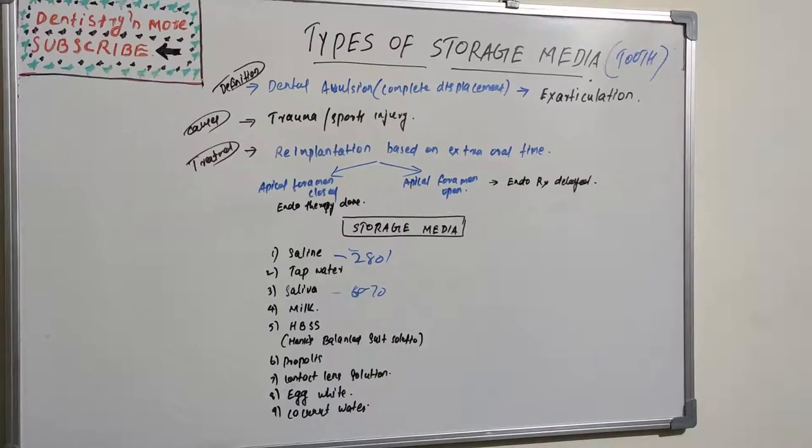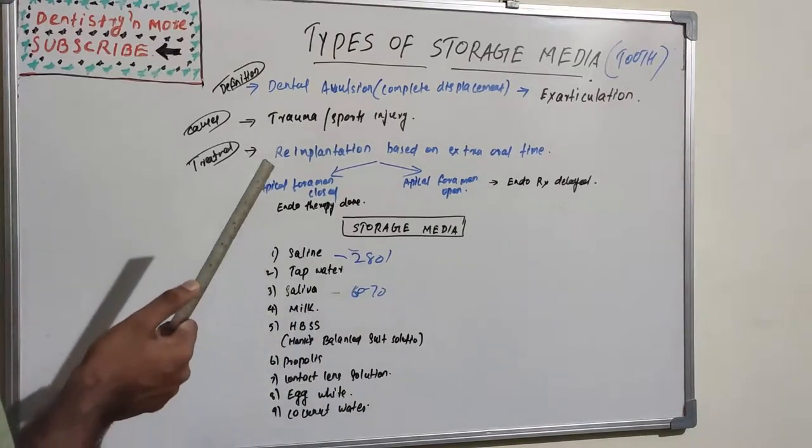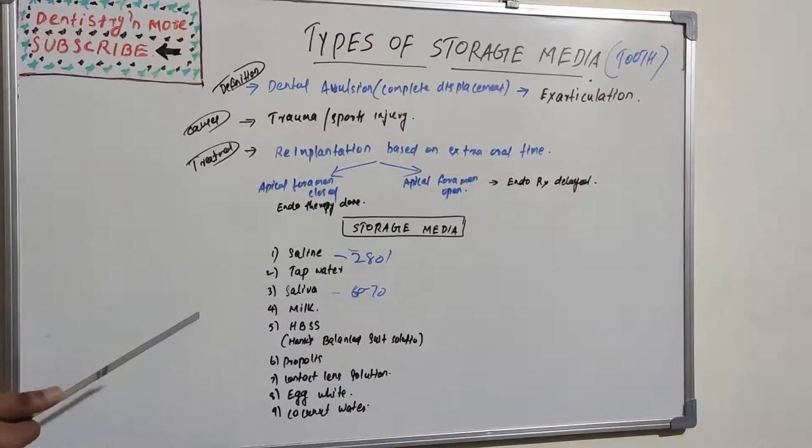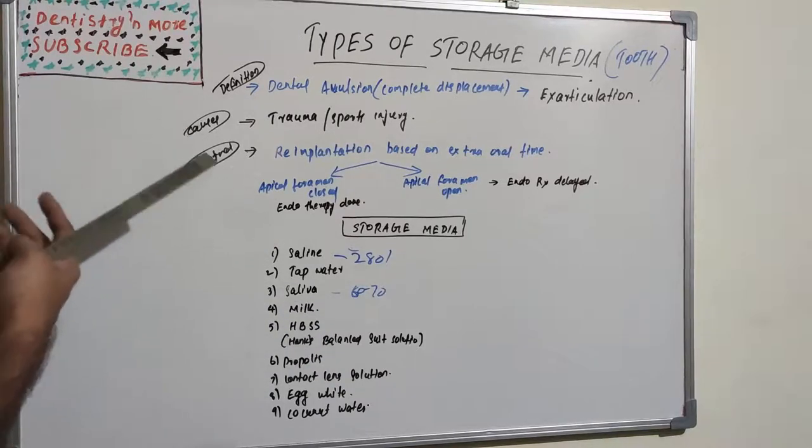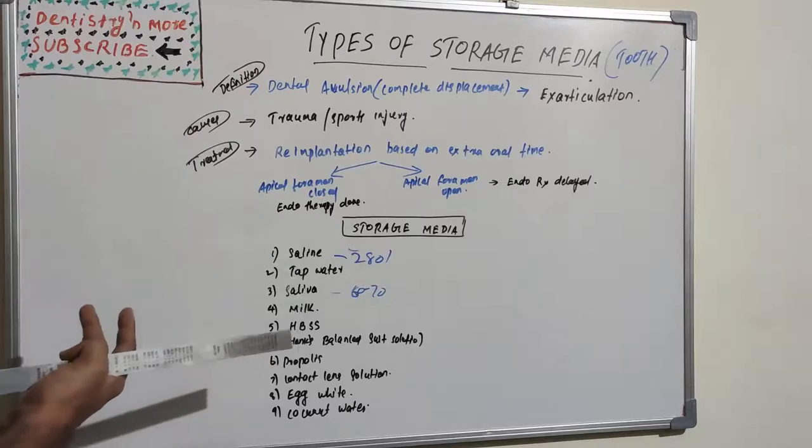Milk is a very important or good storage media because it has amino acids, carbohydrates, and other vitamins. If it is used in the first 20 minutes after avulsion there will be very favorable results due to this content - amino acids, carbohydrates, and vitamins.